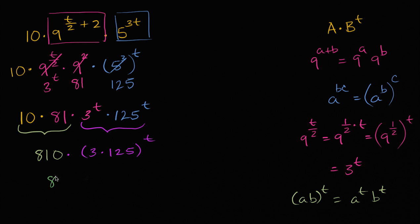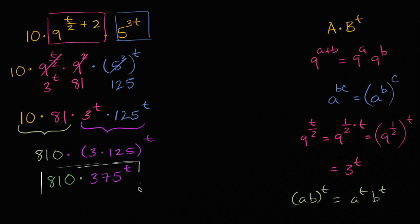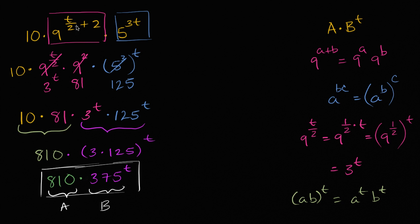So I'm in the home stretch. This is going to be 810 times — 3 times 125 is 375 — times 375 to the t power. And that's about as simplified as we can get. We did indeed write it in the form a times b to the t, where a is 810 and b is 375. I know it looked a little daunting at first, but if you just keep applying exponent properties and get multiple things to the t power, you see that in not too many steps you get to something a lot less hairy.